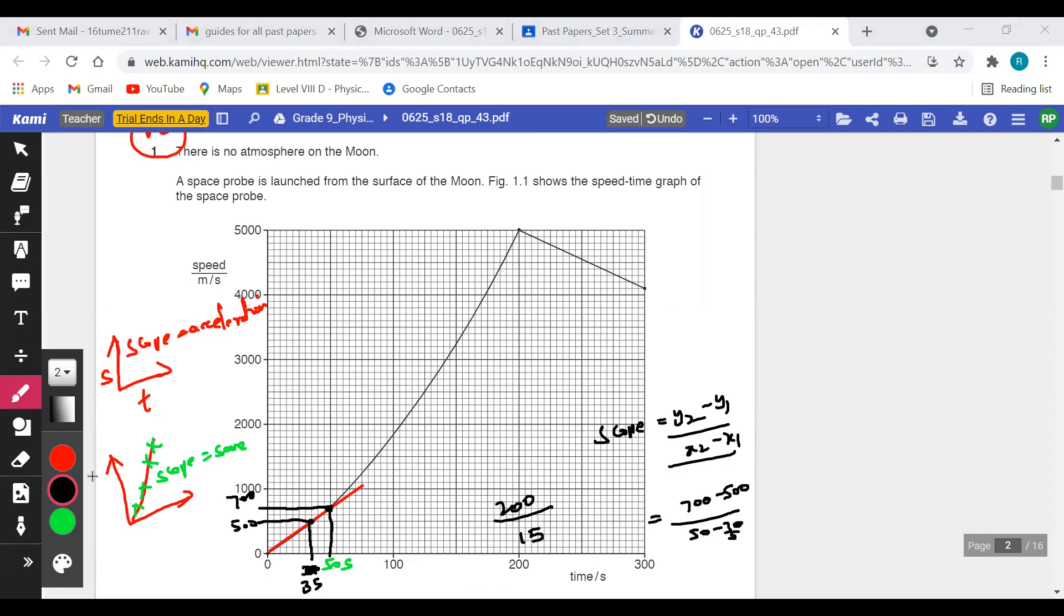You will be getting the answer as 13.33 meters per second squared. Unit is very important.